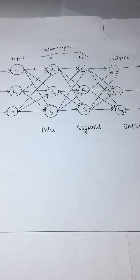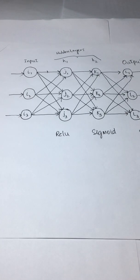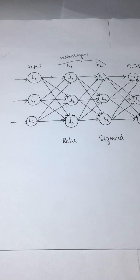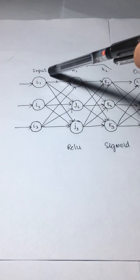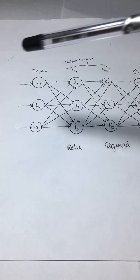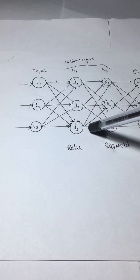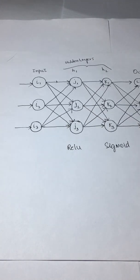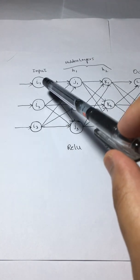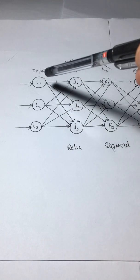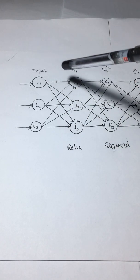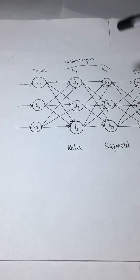We will consider the same network shown here. This is basically your input layer and this is your first hidden layer. All of these weights — basically the I1 weights — weights I1J1, I1J2, I1J3, and similarly the other weights as well, will be randomly initialized.